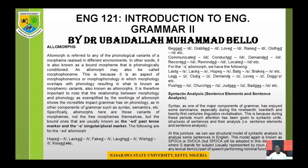This -ed bound morpheme has three different pronunciations: it is either /t/, /d/, or /ɪd/. It has three different pronunciations, and this is why we say it is a bound morpheme that is phonologically conditioned — and that is why we call it an allomorph.